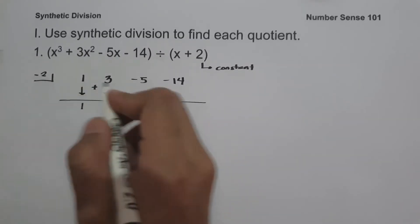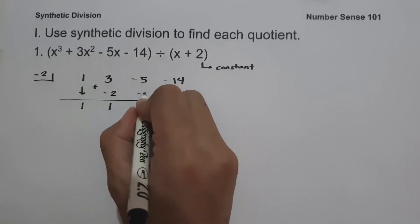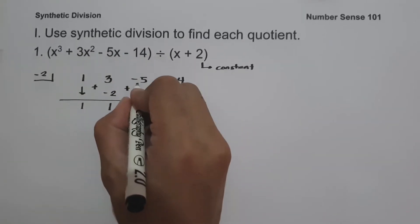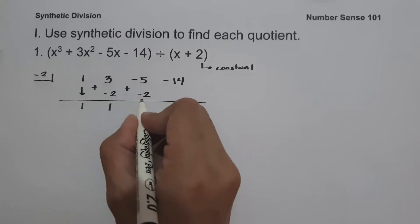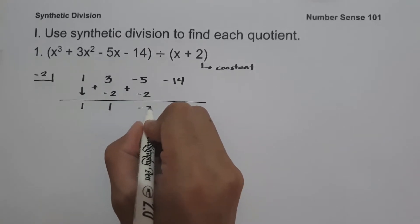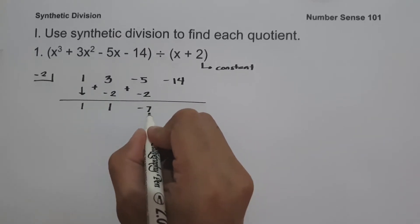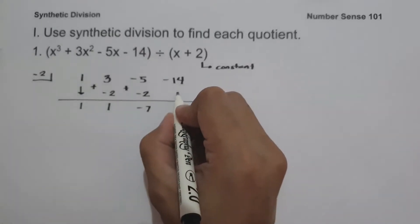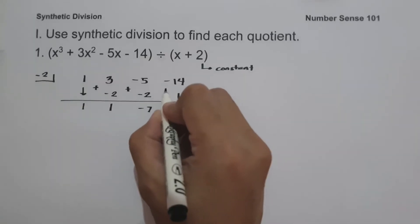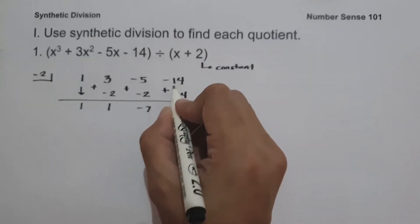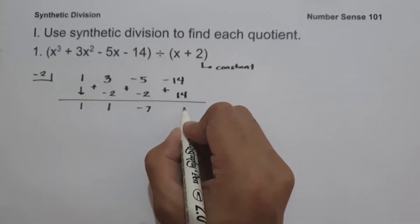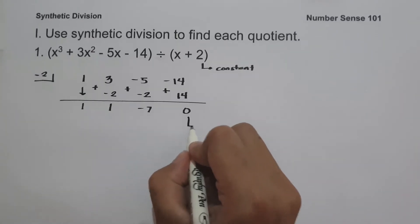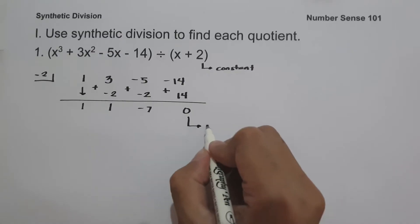One multiplied by negative 2 is negative 2, and negative 5 plus negative 2 is negative 7. Negative 7 multiplied by negative 2 is positive 14. Negative 14 plus 14 is 0. So this will be our remainder.